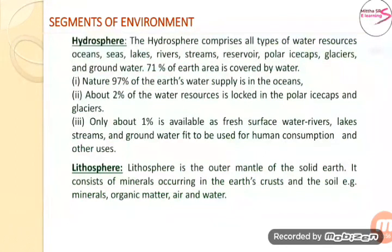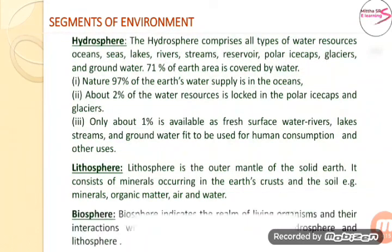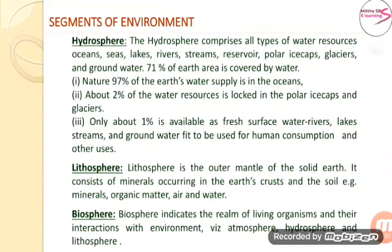The next segment is lithosphere. Lithosphere is the outer mantle of the solid earth. It consists of minerals occurring in the earth's crust and the soil — examples include minerals, organic matter, air and water. The last segment is biosphere. Biosphere indicates the realm of living organisms and their interactions with the environment, including the atmosphere, hydrosphere and lithosphere.